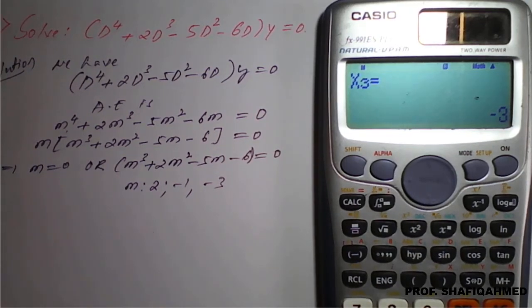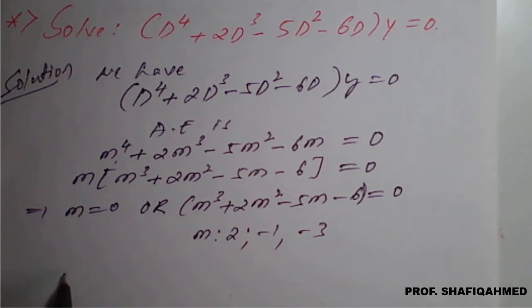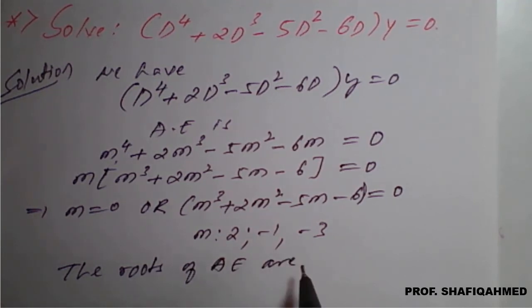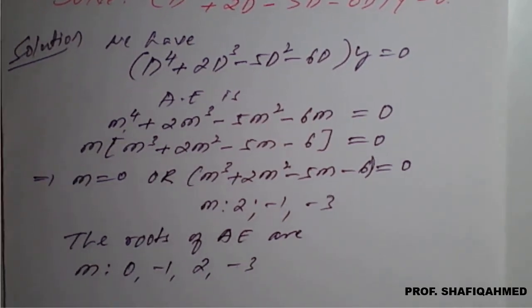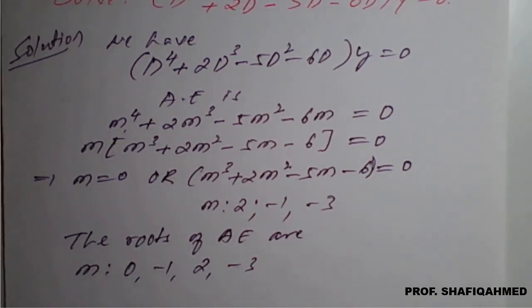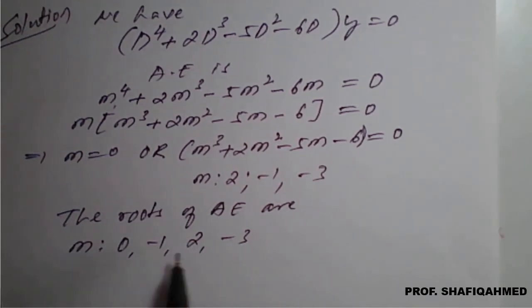Therefore, on rearrangement, the roots of auxiliary equation are m equal to 0, minus 1, 2, and minus 3.